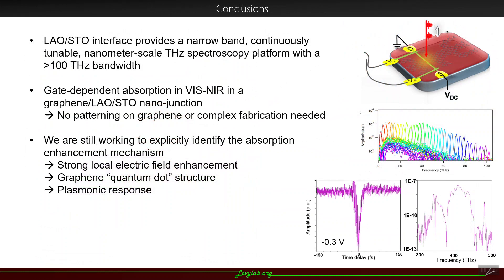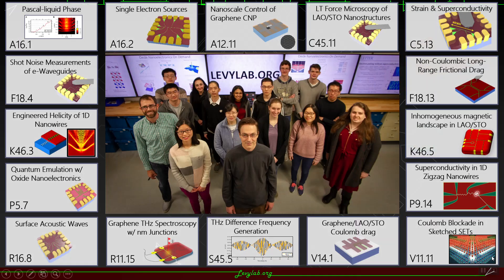To conclude, the LAO-STO interface provides a narrowband, continuously tunable nanometer-scale terahertz spectroscopy with ultra-broad bandwidth. Gate-dependent absorption is achieved in the visible to near-infrared using this gate-dependent measurement of the graphene device. We're still working to explicitly identify the absorption enhancement mechanism — whether it's due to the strong local electric field at the junction, a graphene quantum dot structure that is forming, or the plasmonic response of the graphene itself. With that, I'd like to take any questions.